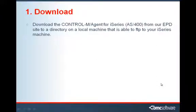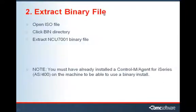First we need to download the Control-M Agent for I-Series from the EPD site to a directory on a local machine that's able to FTP to your I-Series machine. Once you have the ISO file loaded on the PC, we need to open the ISO file. You can use Daemon Tools or WinZip, and we want to click on the bin directory. In that directory is a file called ncu7001. This is the binary file we're going to use to put in the save file on the I-Series.